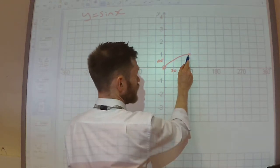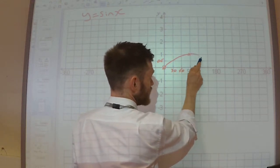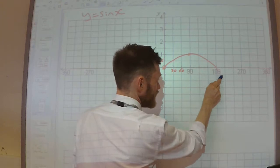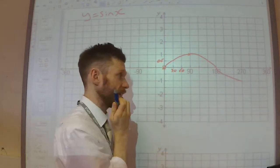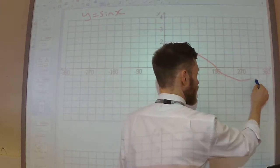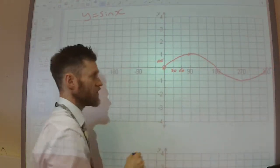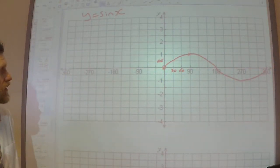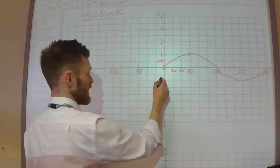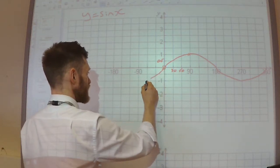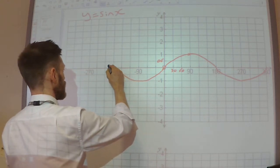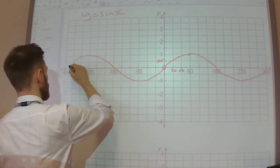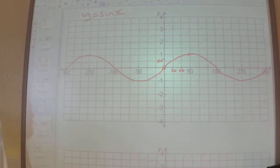Carrying on, we know it goes from up here, it goes down to 0 at 180, then down to minus 1 at 270, and then back up to 0 at 360. For the negative part of the graph, we just keep going with the pattern. So it looks something like that. That's a sine graph.